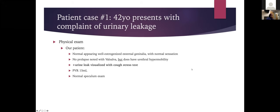For our patient, she has normal, well-estrogenized external genitalia, normal sensation, no prolapse on Valsalva, but she does have urethral hypermobility — you can see the anterior vaginal wall move a bit with Valsalva. She did leak urine on the cough stress test, her PVR was 15 (not concerning), and her speculum exam was normal.